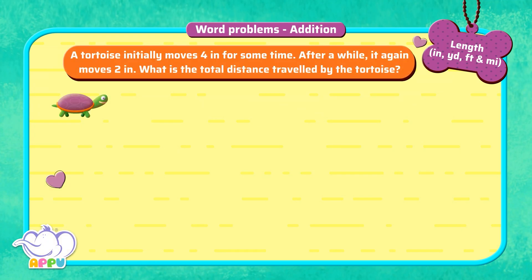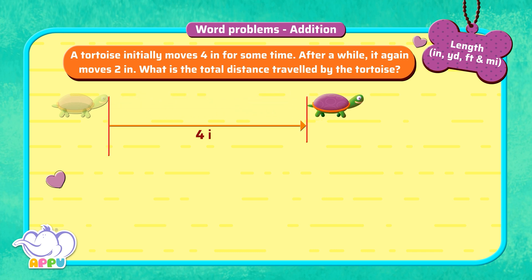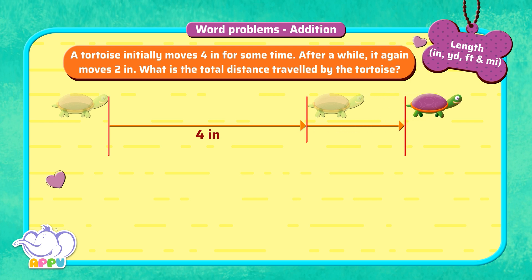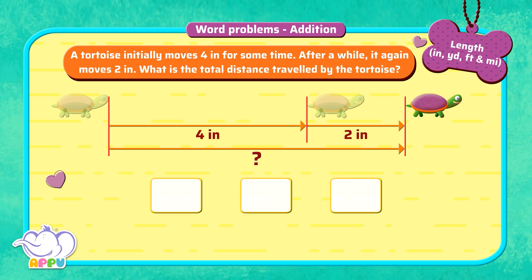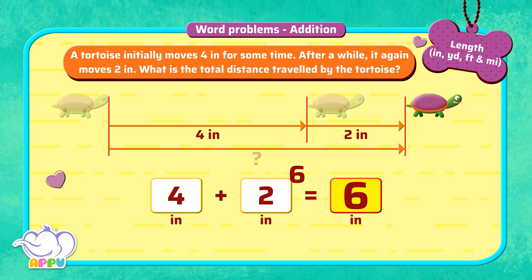A tortoise initially moves 4 inches for some time. After a while, it again moves 2 inches. What is the total distance travelled by the tortoise? To find the total distance travelled by the tortoise, we add each of the distances. 4 inches plus 2 inches, which is equal to 6 inches. So, the total distance travelled by the tortoise is 6 inches.